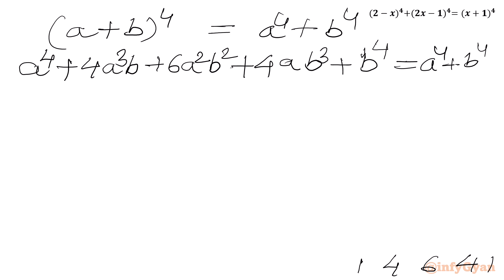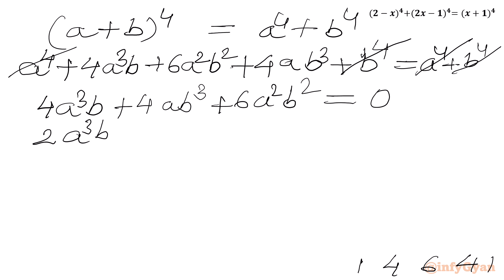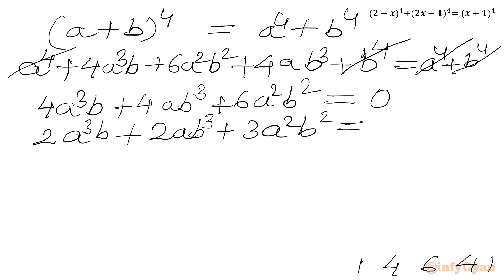Now I will subtract a^4 plus b^4 from both sides, so those two terms cancel. Our equation becomes: 4a³b plus 4ab³ plus 6a²b² equal to 0. The equation looks divisible by 2, so let us divide by 2: 2a³b plus 2ab³ plus 3a²b² equal to 0.